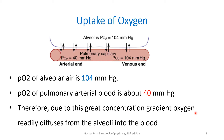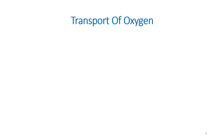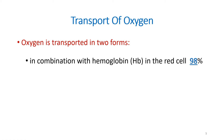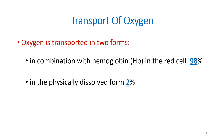Now that oxygen from the lungs has reached the blood, it has to be transported in the blood. What are the modes of transport of oxygen? It is transported in two forms: one is in combination with hemoglobin, which is the majority — 98% is transported combined with hemoglobin — and the remaining 2% is in the physically dissolved form.